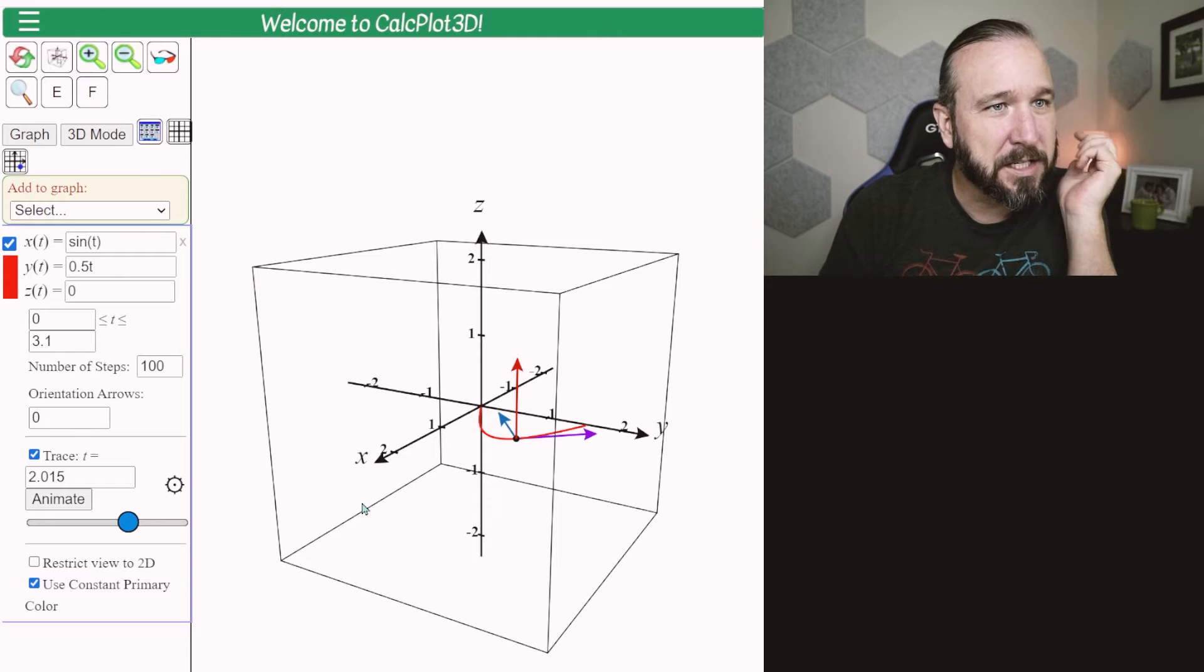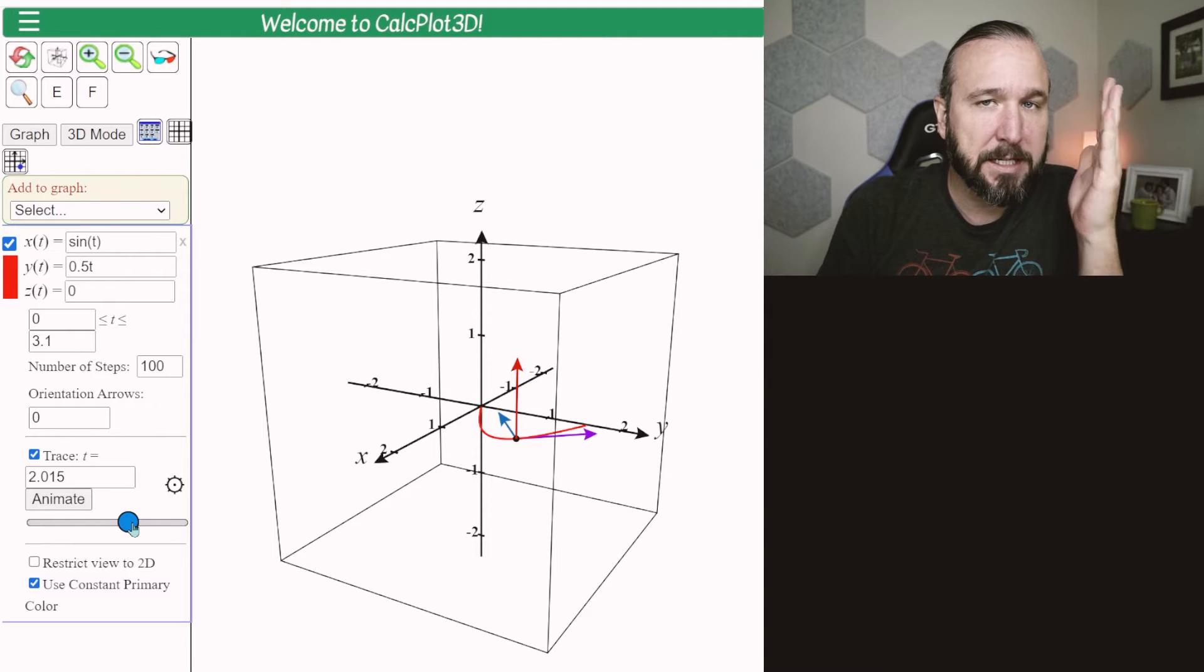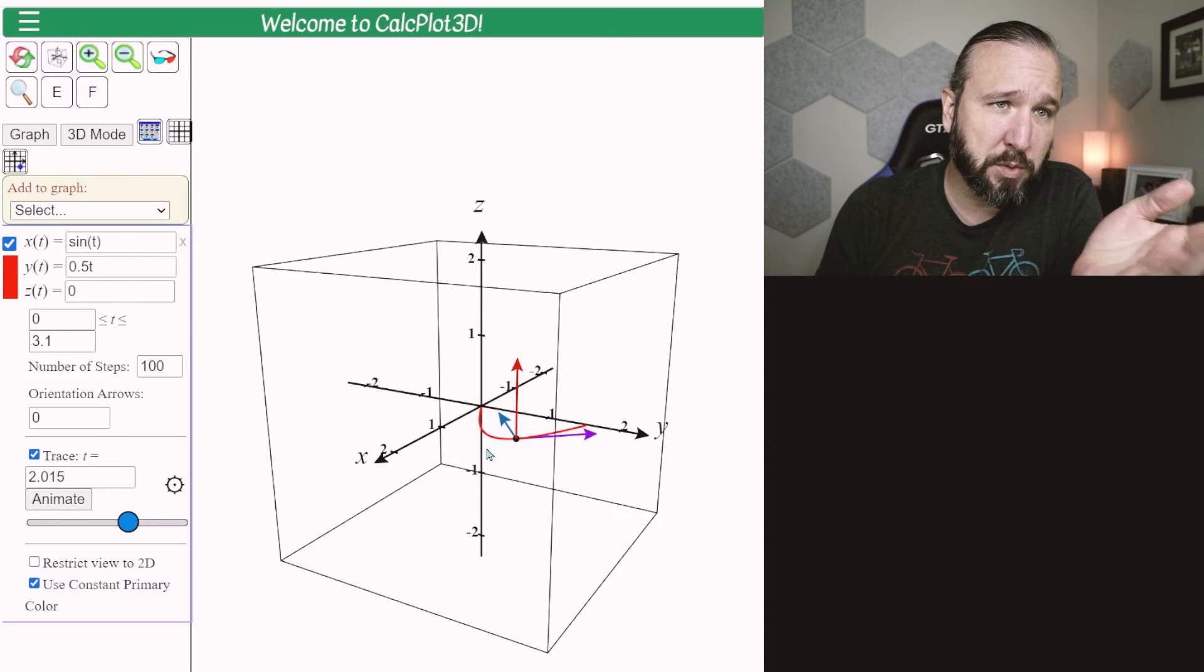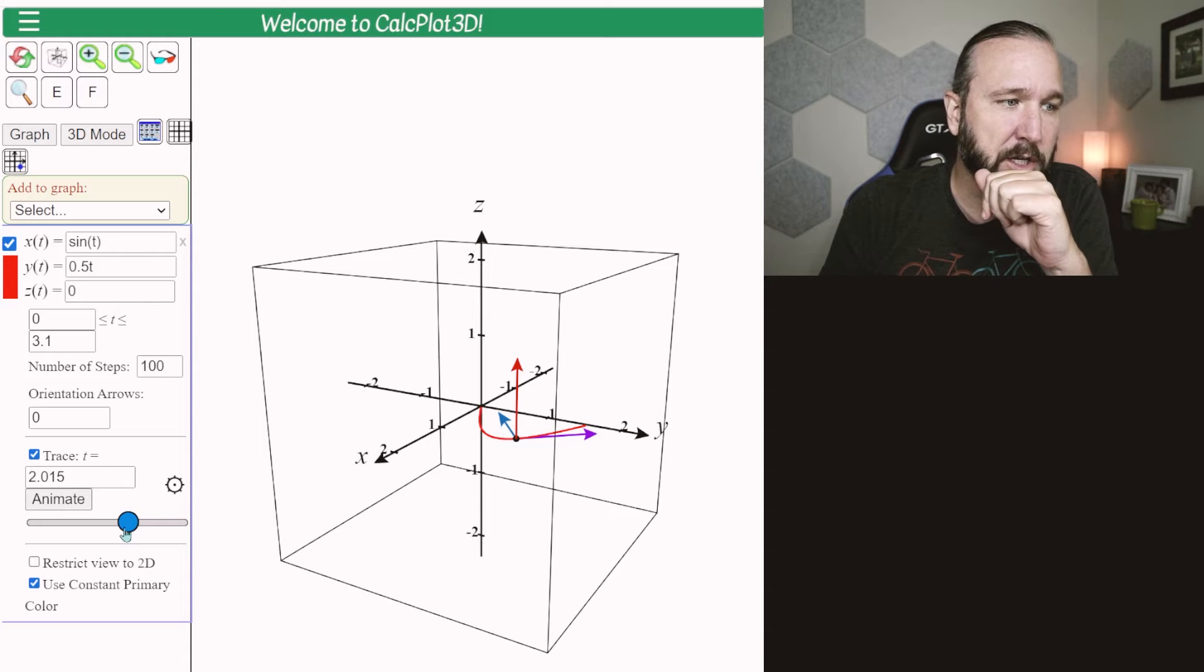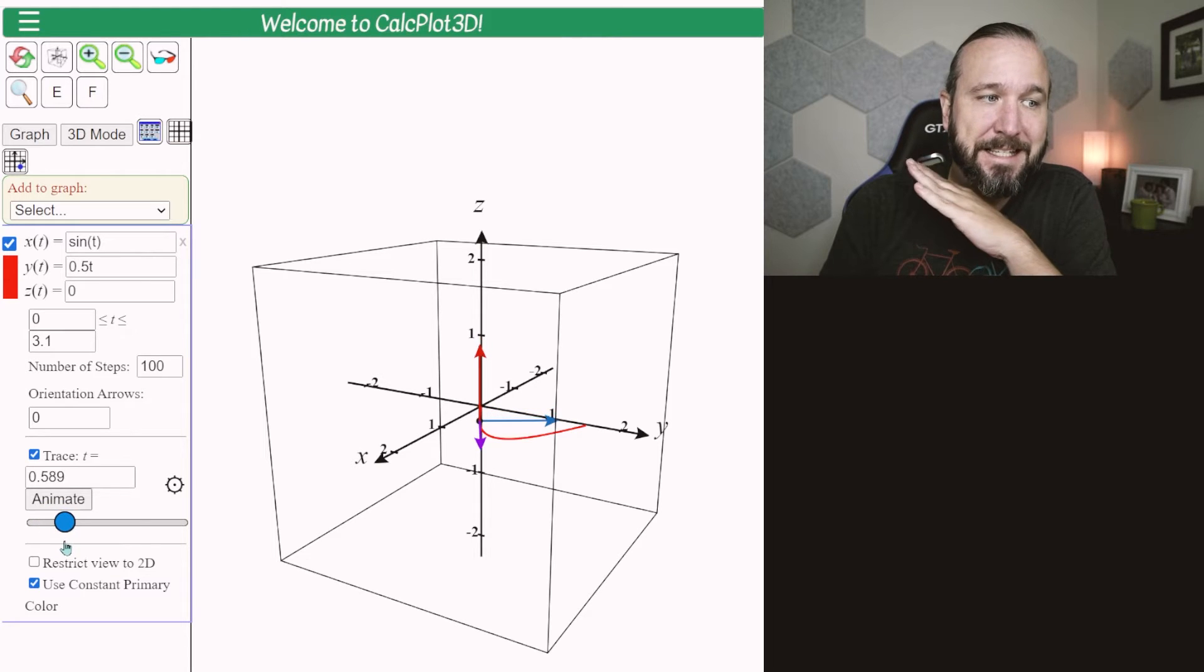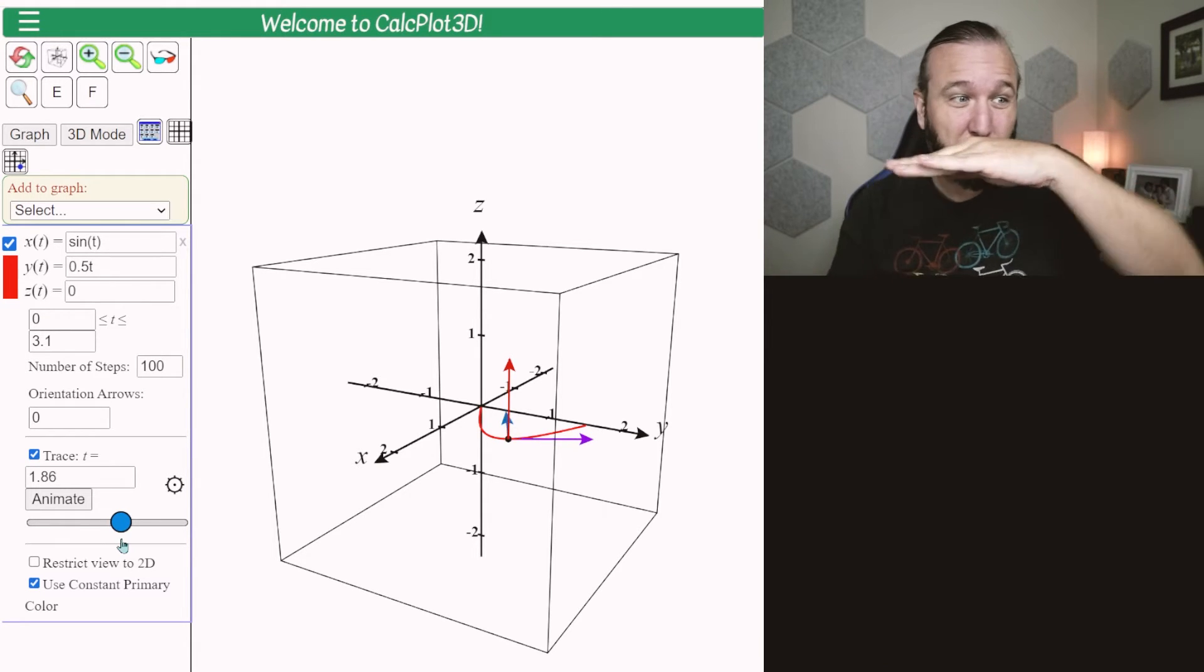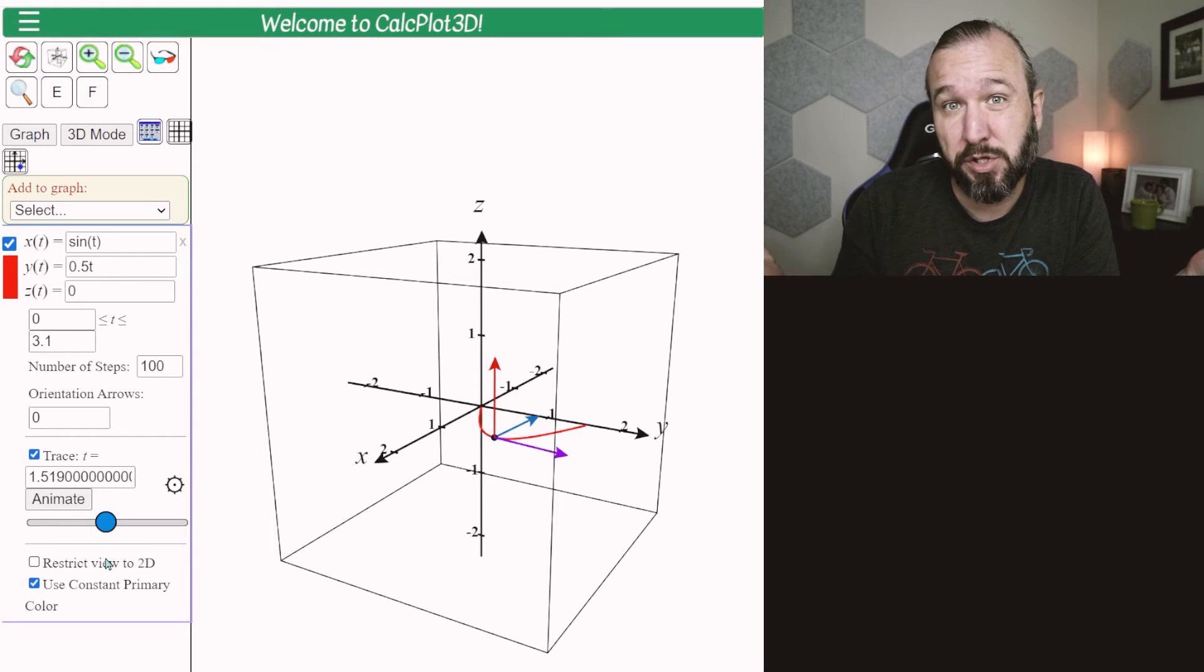And here is an example on CalcPlot 3D. So the purple arrow is the unit tangent vector. That's the direction. The blue arrow is the unit normal vector. That's which way it's curving. And then the red arrow is the unit binormal vector. So I want to do a really simple example here. In this example, the torsion is zero. You can see that the airplane is, this is only a yaw. It's only where the airplane is turning like this. And you can see there that the red arrow doesn't move at all. So this is just a really simple example where the torsion should be zero.